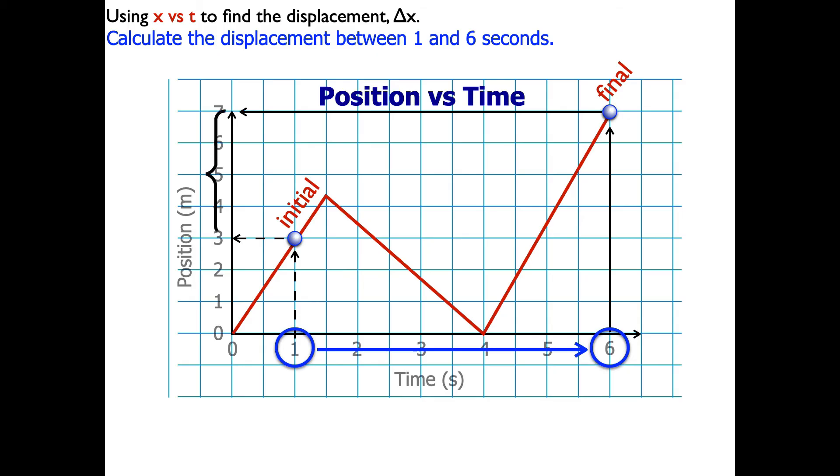So now I just need to find this difference between them. So that'll be the final minus the initial. So our delta x is going to be 7 minus 3, which is 4 meters. So the displacement on this graph is 4 meters.